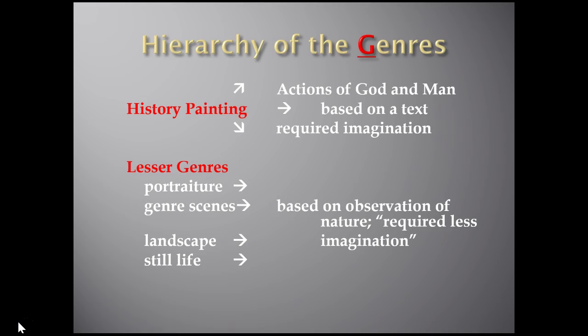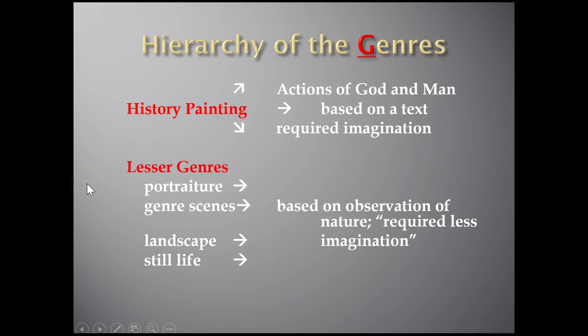It's also important to talk about the hierarchy of the genres of different paintings, as we discussed when looking at Dutch Baroque art. There were portrait painters, genre scene painters, landscape painters, and still life painters. History painting was considered the highest genre — consisting of actions of God and man based on a text, requiring imagination to visualize these scenes. Lesser genres included portraiture, genre scenes, landscape, and still life — some based on observation of nature, requiring less imagination.